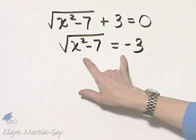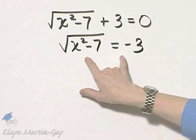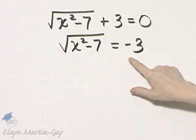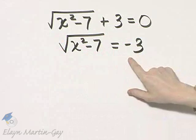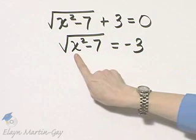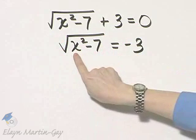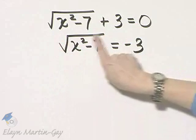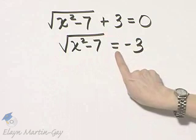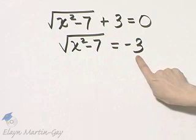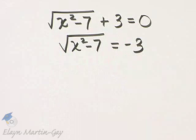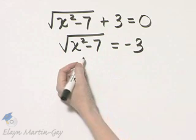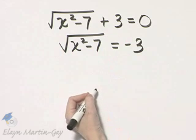By the way, at this point in solving, you may immediately notice that this equation will have no solution, because there's no value for x that when you take the square root gives you a negative number. But if you don't happen to notice that, you'll still have no solution as you continue solving.